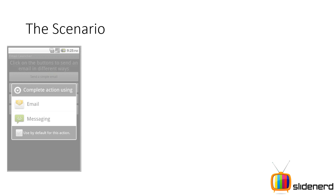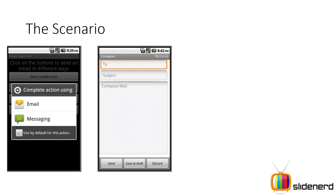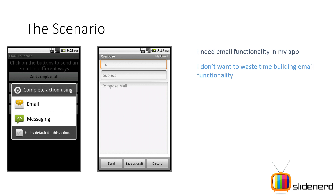Here I have a scenario. I have an app that I want to send email or SMS. But remember, for this I'll have to write an email activity, make some EditTexts, and handle the functionality of sending email. But remember, your Android operating system already has built-in email functionality. So why would I waste my time writing email functionality? I would simply find a way to reuse it. I need email functionality in my app, I don't want to waste time building it — I will use an existing activity.